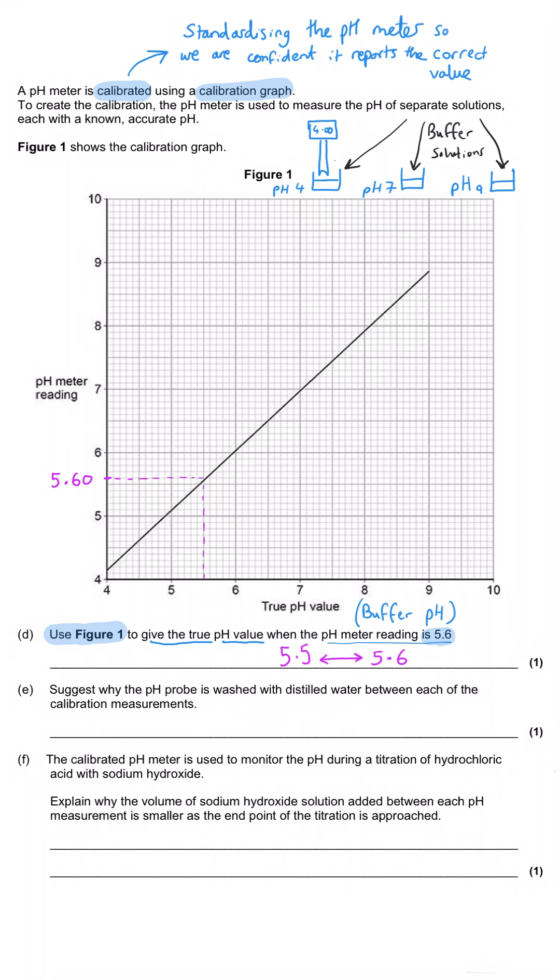In part E, you've been asked to suggest why the pH probe is washed with distilled water between each of the calibration measurements. You'd probably have at least three different calibration measurements to construct this graph. The idea here is that you don't want any residual solution or substance which could interfere with your reading. You need to communicate the idea that different solutions must not contaminate each other.